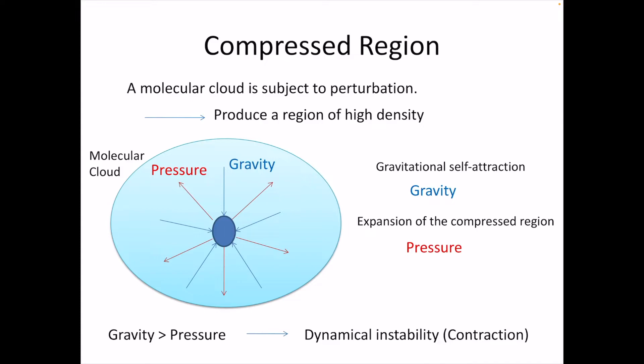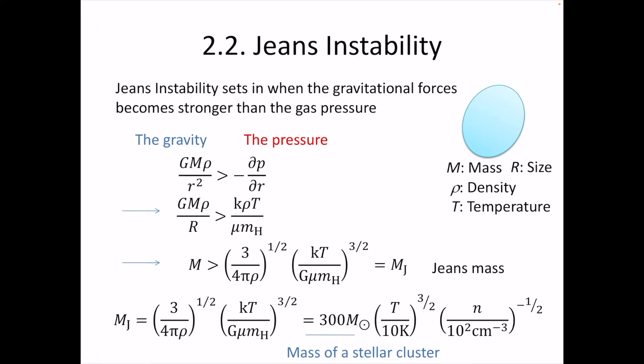We would like to find out which force is larger than the other. If gravity is larger than pressure, we expect the object to collect into the higher density region to form stars. Such instability was studied by Jeans, and because of his discoveries, we call it the Jeans instability. Jeans instability sets in when the gravitational force becomes stronger than the gas pressure.